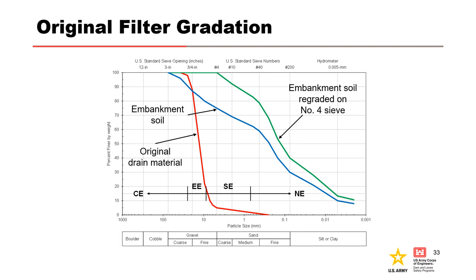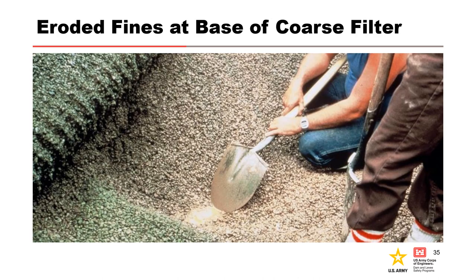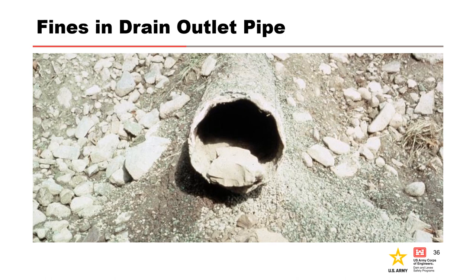For broadly graded materials prone to internal instability, the filter design should have been based on the mobile fraction of the base material rather than the total fraction. Had the filter design taken into account the internal instability of the base soil, this incident may have been avoided. The maximum D15 of the filter drain should have been less than 0.7 millimeters. The drain outlet collector pipe was a perforated corrugated metal pipe surrounded by coarse drain material. The lost fines were found below the bottom half of the pipe in the drain material, and the drain outlet pipe was also half full of fines from the fill. It was concluded that fines and fine sands were deposited in the drainage fill materials, and some may have washed through drains and discharged into the downstream channel.